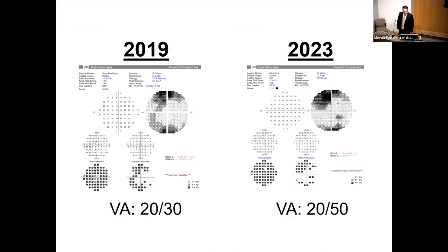He now has an advanced 10-2 and worse vision, most likely due to corneal issues. This is an illustrative case of glaucoma care, and today I'd like to focus on what it tells us about glaucoma surgery — specifically the need for improved surgical options for patients at risk of irreversible blindness.